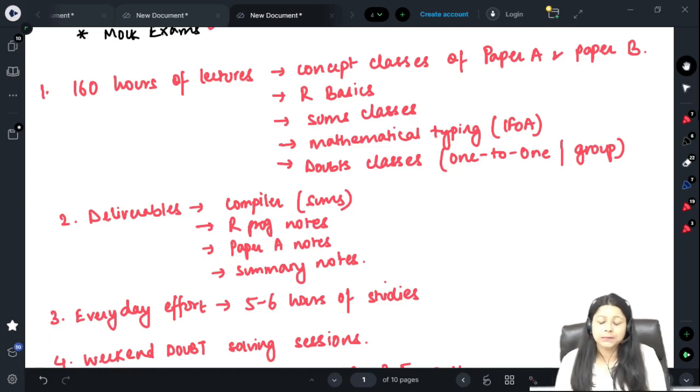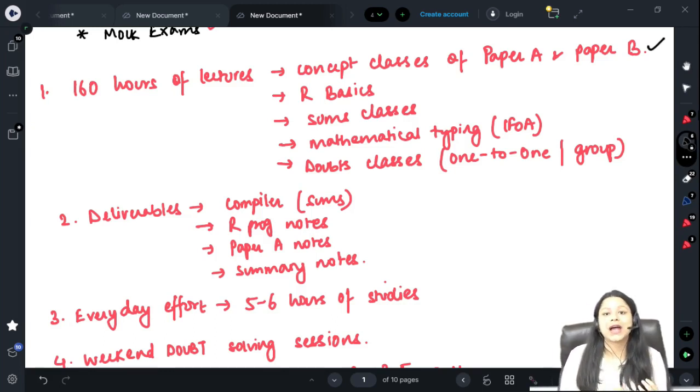It is very important to get the concept right because in CS2 as I have mentioned we have different models, different scenarios. For example if I talk about the CT4 portion, the five chapters which covers the stochastic modeling.